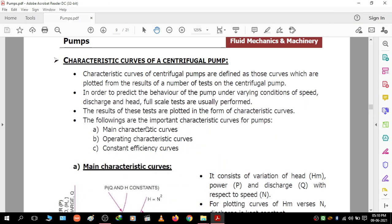Next is characteristic curves of a centrifugal pump. The characteristic curves of a centrifugal pump are those curves which are plotted from the results of a number of tests on the centrifugal pump. The following are the important characteristic curves: main characteristic curves, operating characteristic curves, and constant efficiency curves.